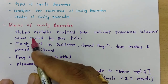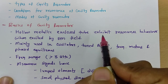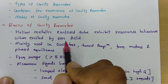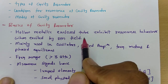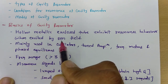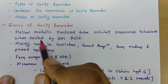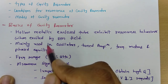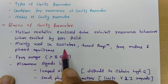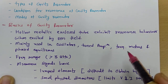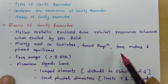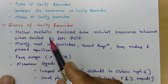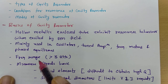A cavity resonator is a hollow metallic enclosed tube that exhibits resonance behavior when excited by an electromagnetic field. It is mainly utilized in oscillators, tuned amplifiers, frequency meters, and phase equalizers. Cavity resonators function at frequencies greater than 3 GHz, so they are commonly used in microwave applications.